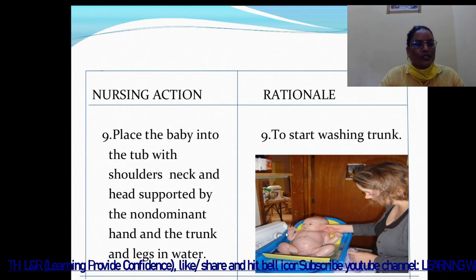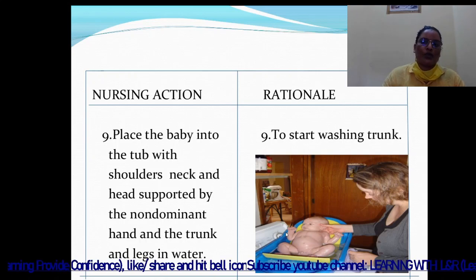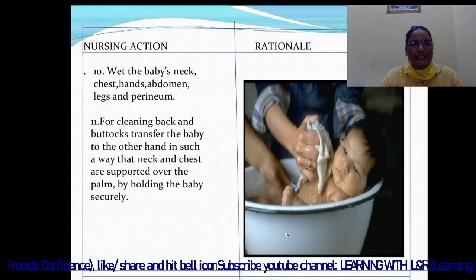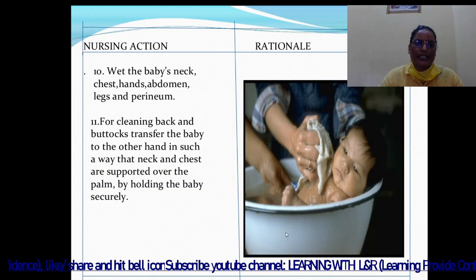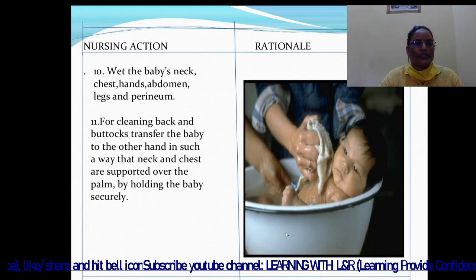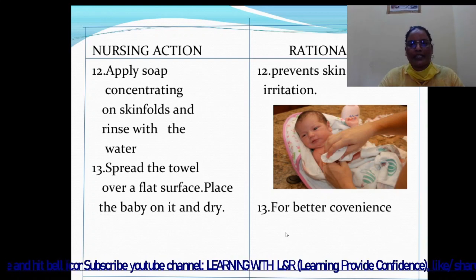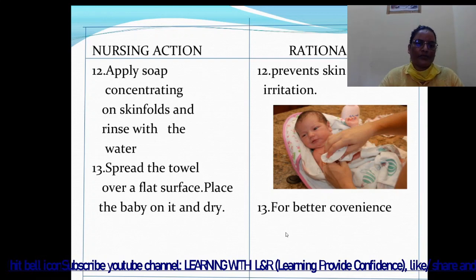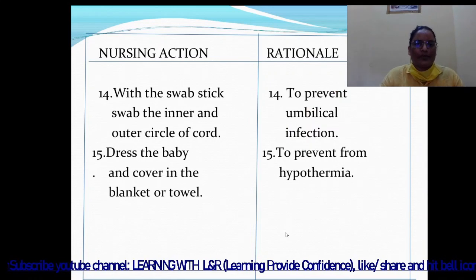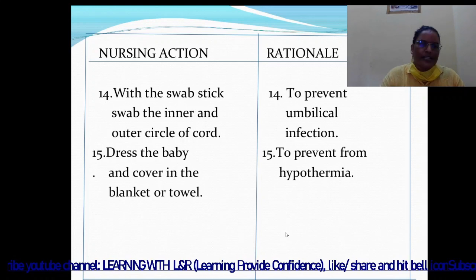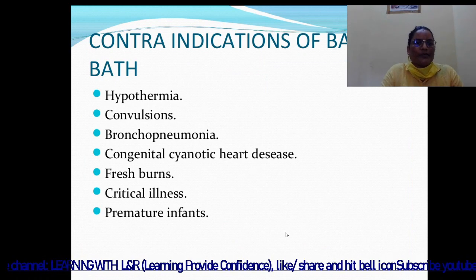Place the baby into the tub with shoulders, neck, and head supported by the non-dominant hand and the trunk and legs in water. Start washing the trunk — wet the baby's neck, chest, hands, abdomen, legs, and perineum. For cleaning the back and buttocks, transfer the baby to the other hand so that the neck and chest are supported over the palm by holding the baby securely. Apply soap concentrating on skin folds and rinse with water to prevent skin irritation. Spread the towel over a flat surface, place the baby on it, and dry for better convenience. With a swab stick, swab the inner and outer circle of the cord to prevent umbilical infection. Dress the baby and cover in a blanket or towel to prevent hypothermia.